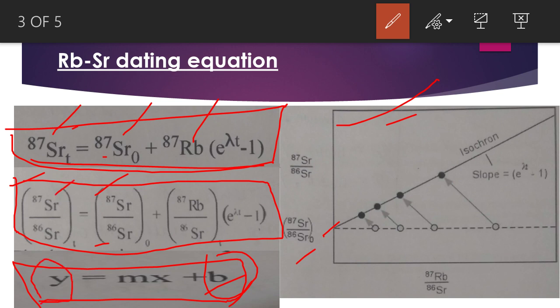We have the y-axis, which is 87Sr/86Sr at time t. For the x-axis, it is rubidium divided by strontium. And m equals the slope, which is determined by e to the power lambda t minus one.